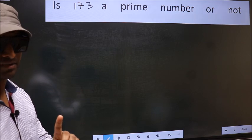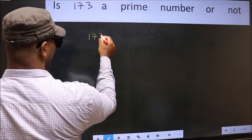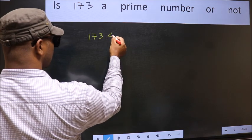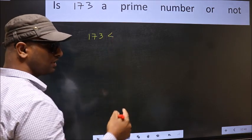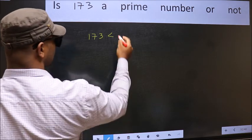For that, step 1. Given number 173. This is less than and close to which perfect square number? That is 196.